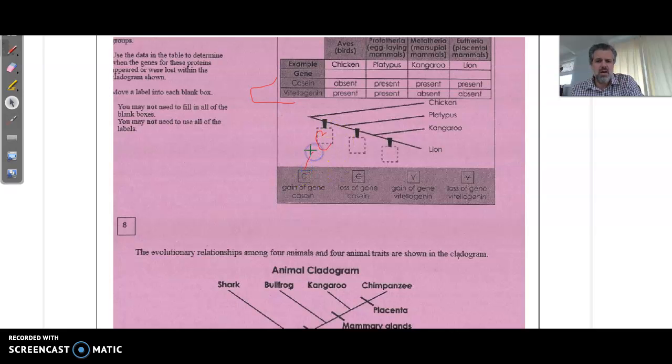And then from the platypus to the kangaroo, we had present, present, present, absent. So we lost the vitilogian. So we have the V here with the line through it showing that it's been lost.